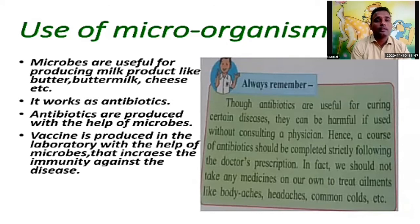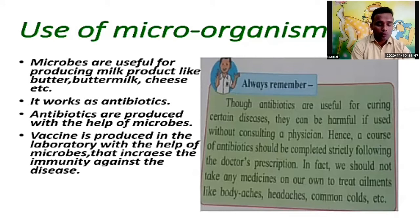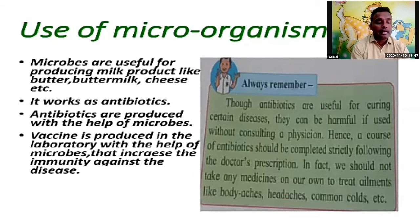Some microorganisms are useful to our body. All types of milk products are made with the help of microorganisms — microbes are useful for producing milk products like butter, buttermilk, and cheese. Microorganisms also work as antibodies, increasing our immunity to fight against bacteria. Vaccines are produced in the laboratory with the help of microbes, which increase the immunity against disease.